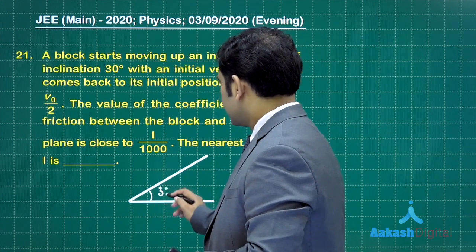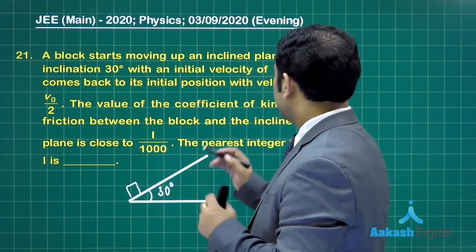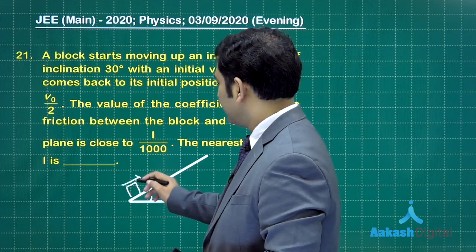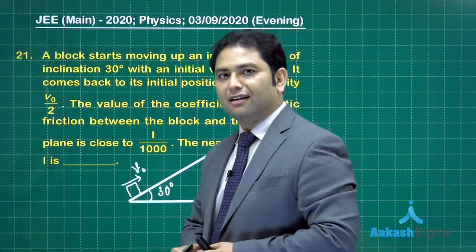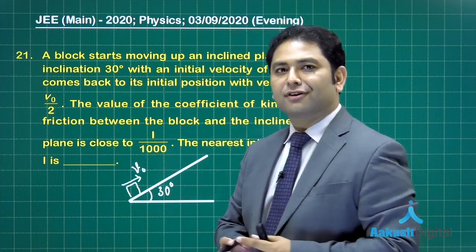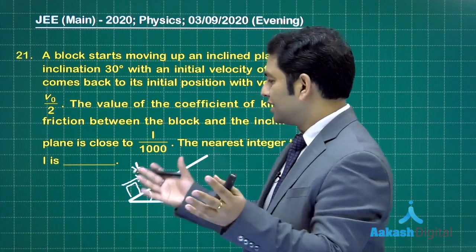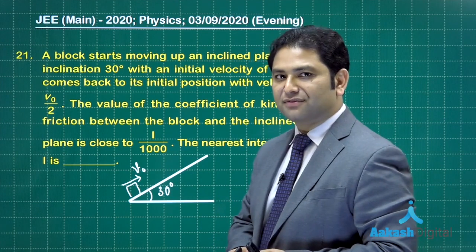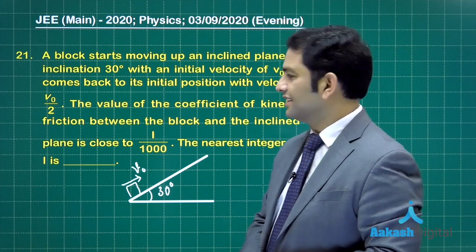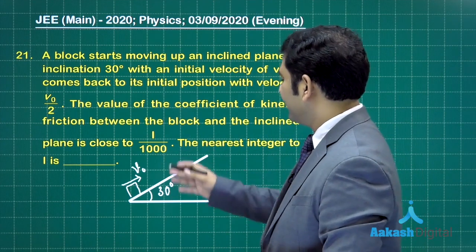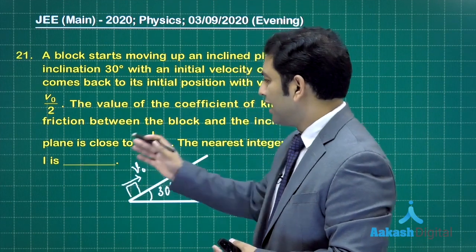The inclined plane is inclined at 30 degrees with horizontal. There's a block initially given a velocity v0, goes up and comes back. When it comes back, it returns with velocity v0 by 2. Clearly it's a case of rough surface, and we need to calculate the coefficient of friction.